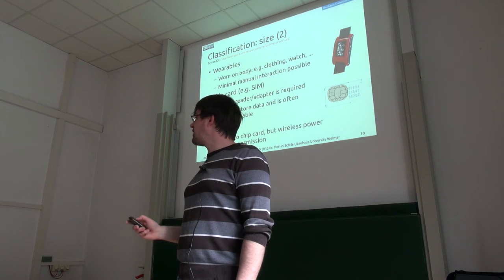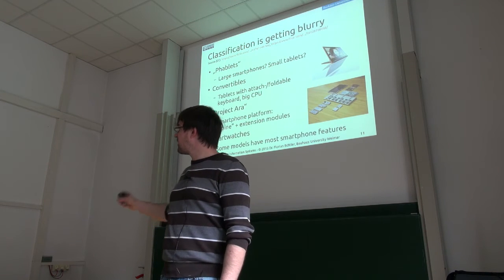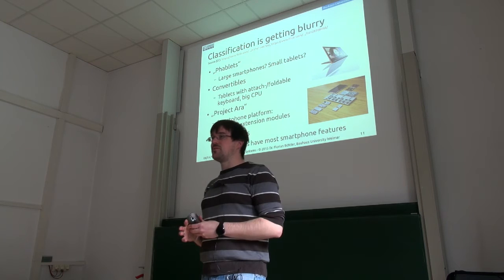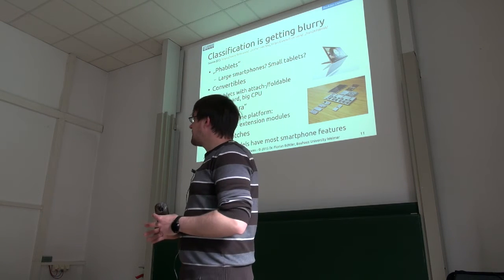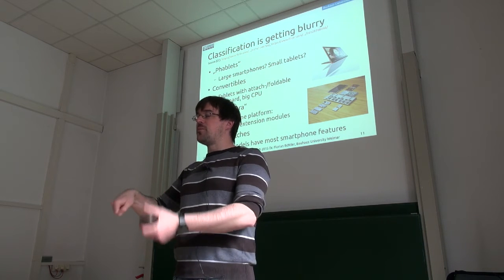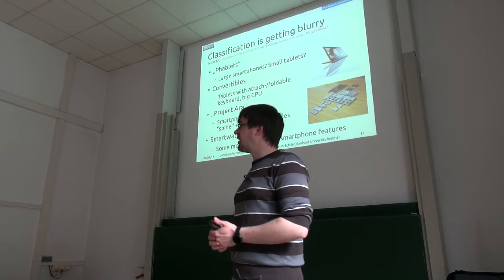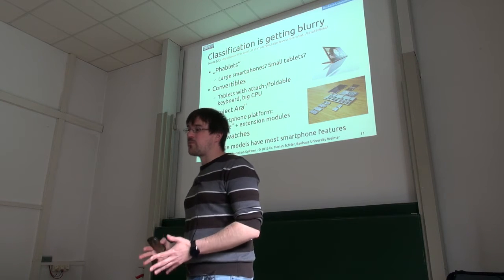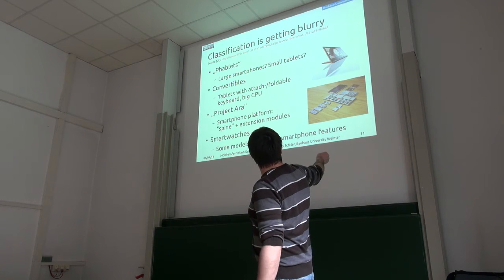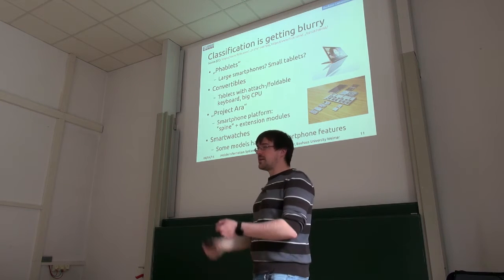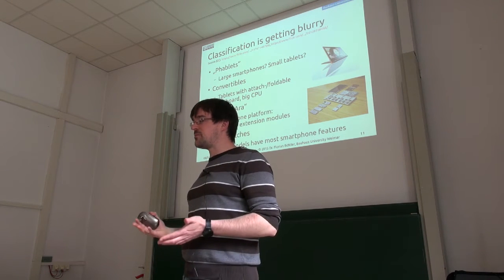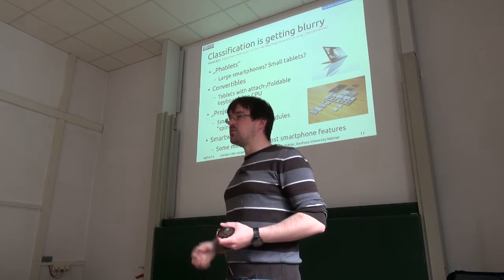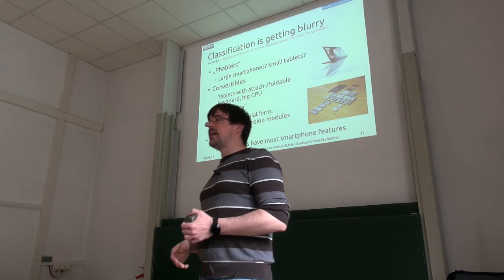This is a rough classification by size. During the last few years, this classification is getting a little blurry — we have tablets somewhere between phones and laptops, convertibles where you can switch from laptop to tablet form factor. And then there's Project Ara from Google — a prototype for a modular smartphone where the device itself is a spine with contacts and you can slide in different modules. Your smartphone would basically become upgradable like a laptop: you could swap out the CPU, add more storage or a better camera without buying a new one.